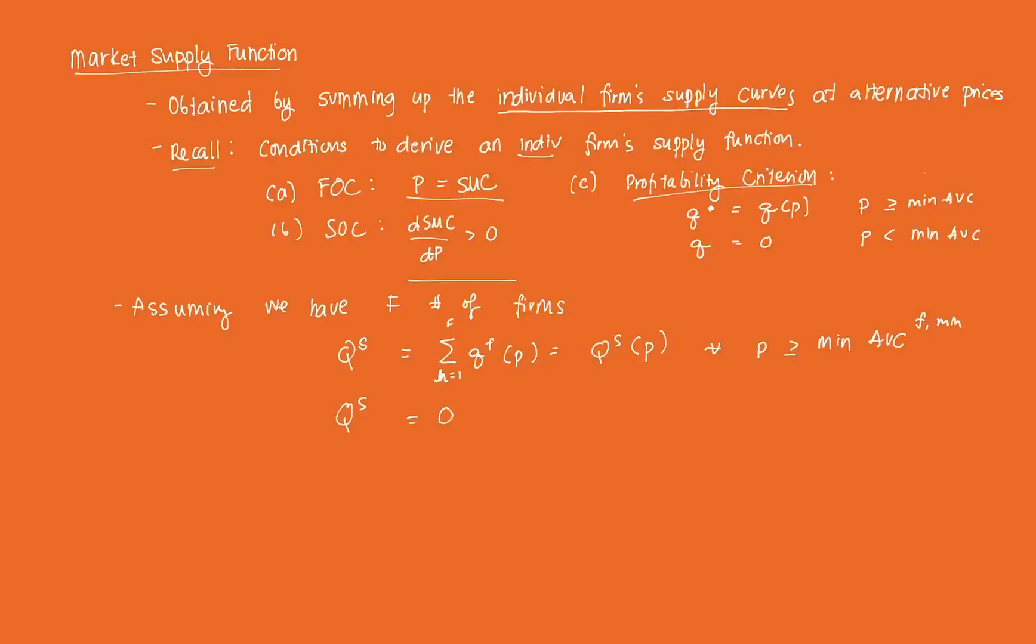That's Q is equal to zero for all P less than min AVC.